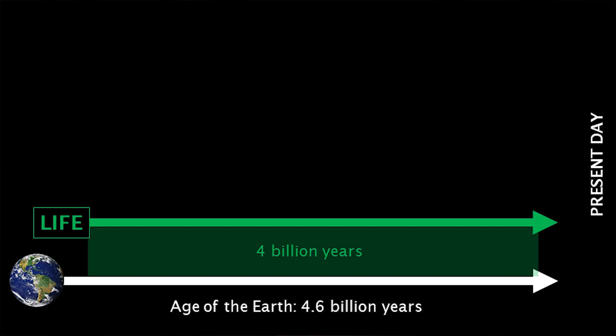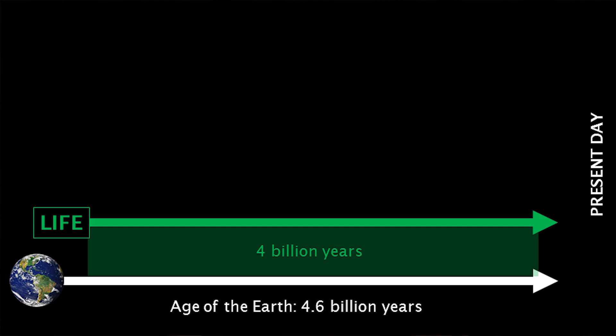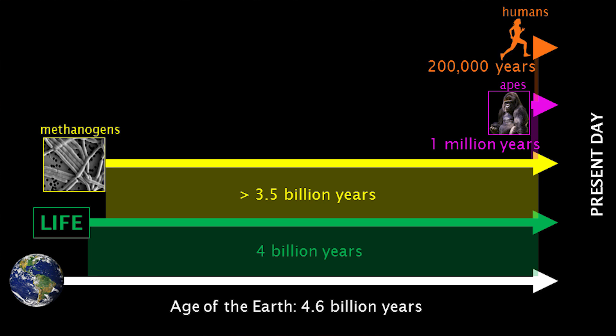This means that organisms that make methane today, called methanogens, have deep evolutionary roots that span almost the entire history of life on Earth. For comparison, apes only date back to 0.3% of life on Earth, and the modern human species has only been around for 0.009% of living history.